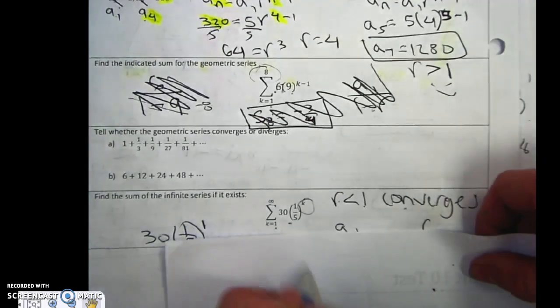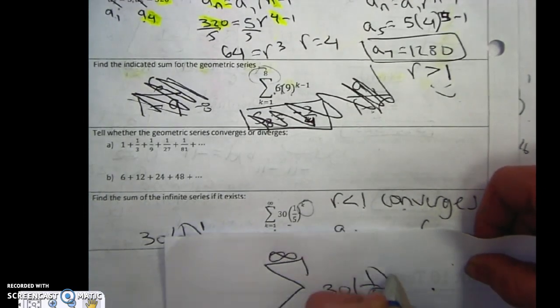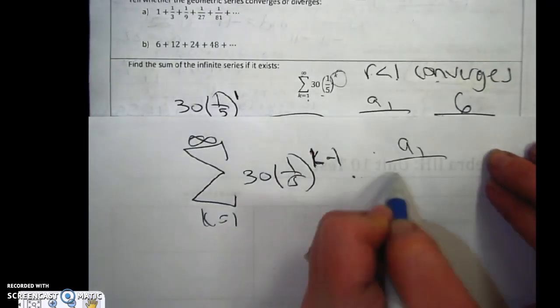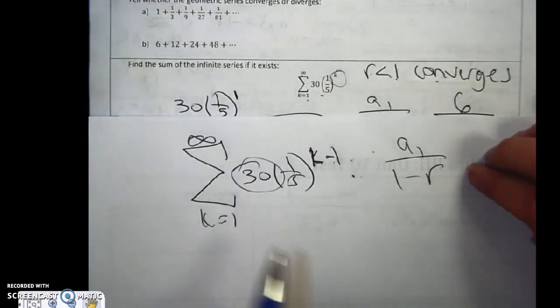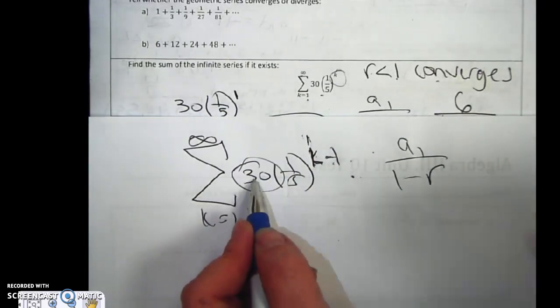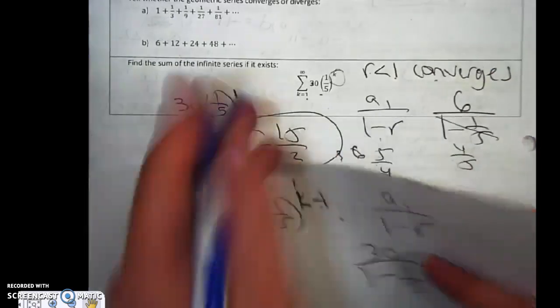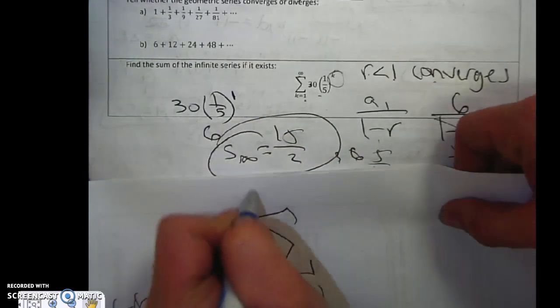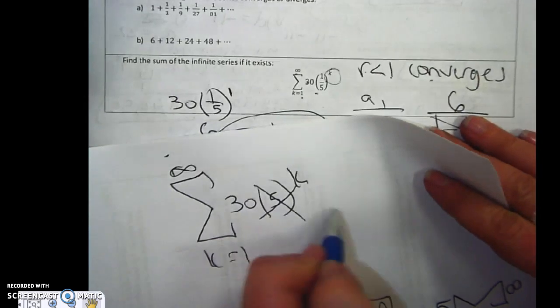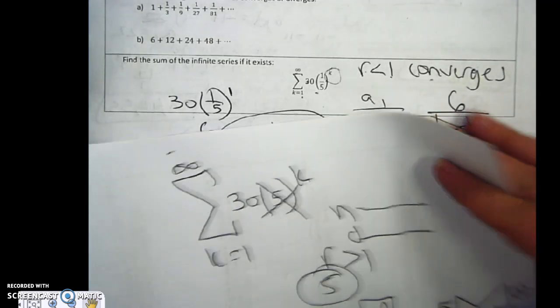If this exact same problem said k equals 1 to infinity 30 times 1 fifth to the k minus 1, then I'd still use the same formula but now since it said the minus 1, this is my first term. Because if I plug in 1, 1 minus 1 is 0. Anything to the 0 is 1, times 30 is 30. So that would be 30 over 1 minus 1 fifth. If this same problem here instead said k equals 1 to infinity 35 to the k, there is no sum. It diverges because my ratio is greater than 1.